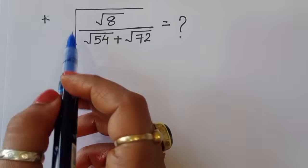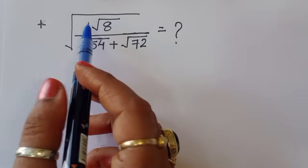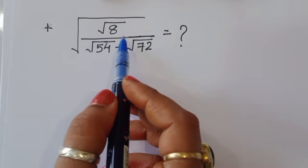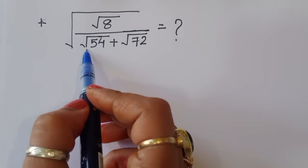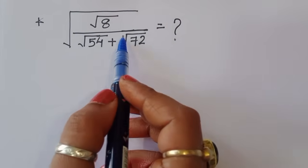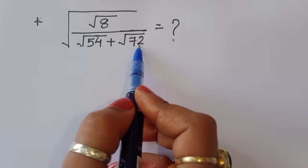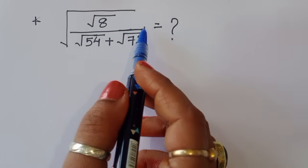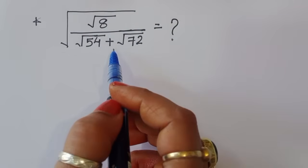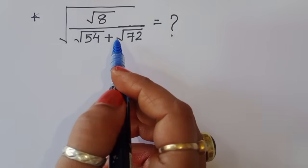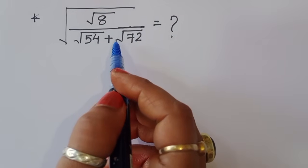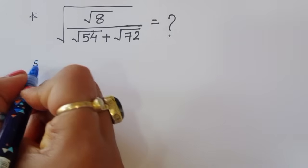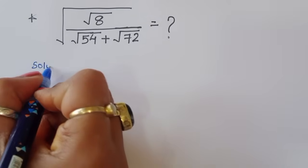The question given is: square root of 8 divided by square root of 54 plus square root of 72. We have to find out the value of this term. Let's see how we can find the solution.